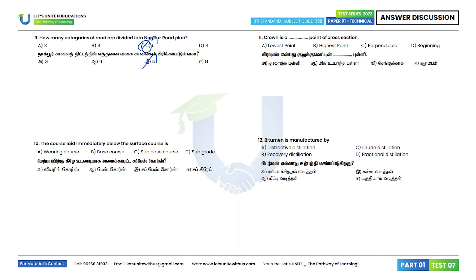10th question: The course laid immediately below the surface course — Option B is the correct answer. 11th question: Crown is the highest point of the cross section. Option B is the correct answer.